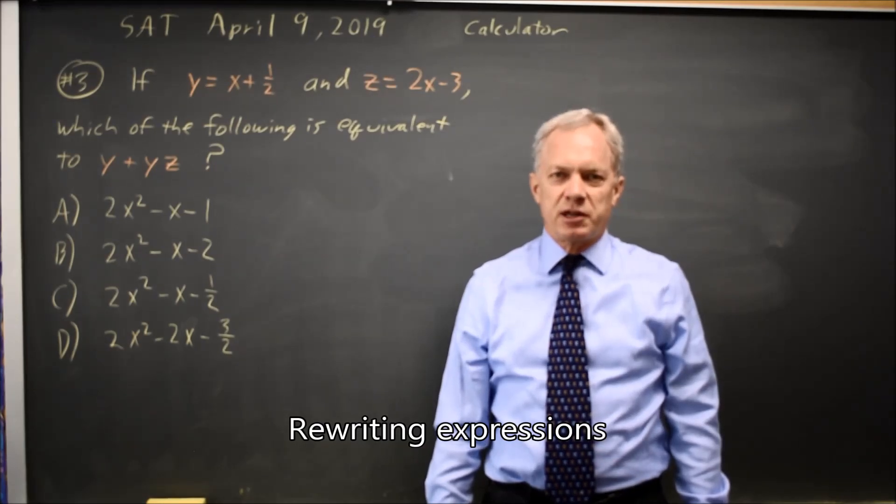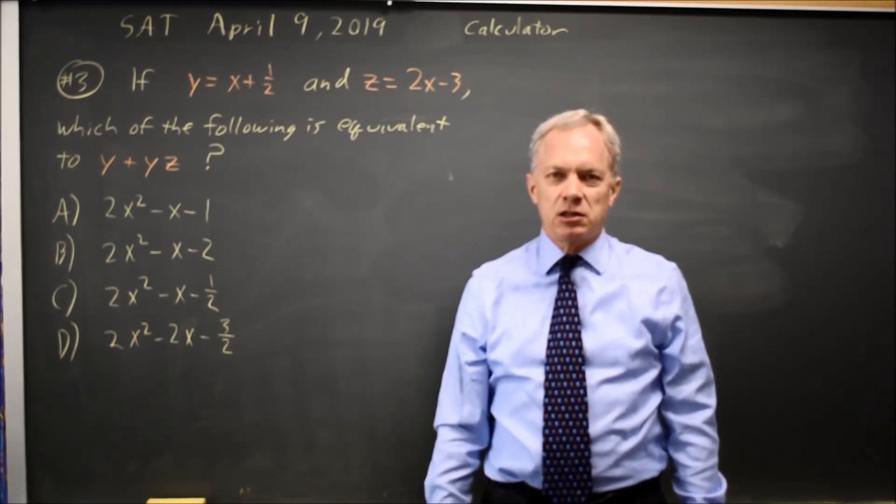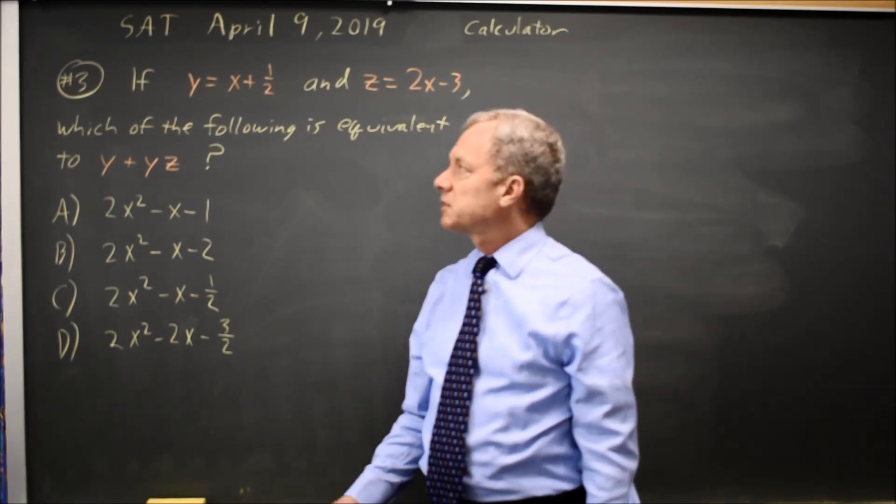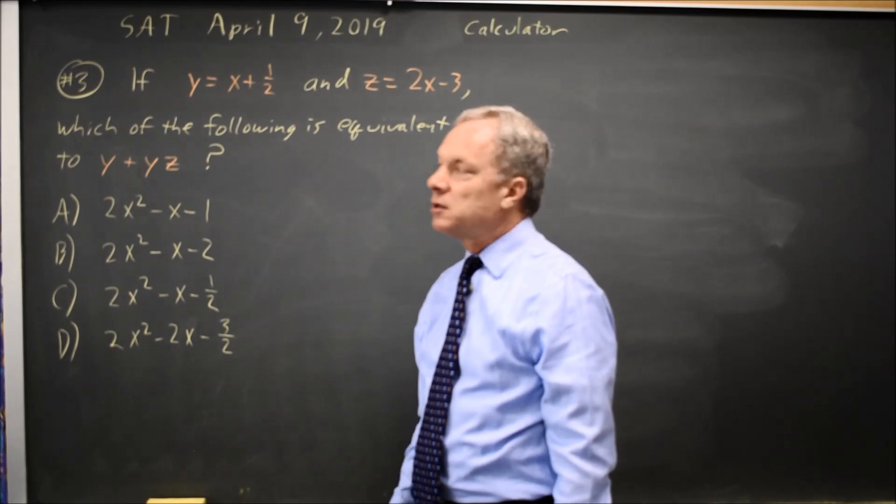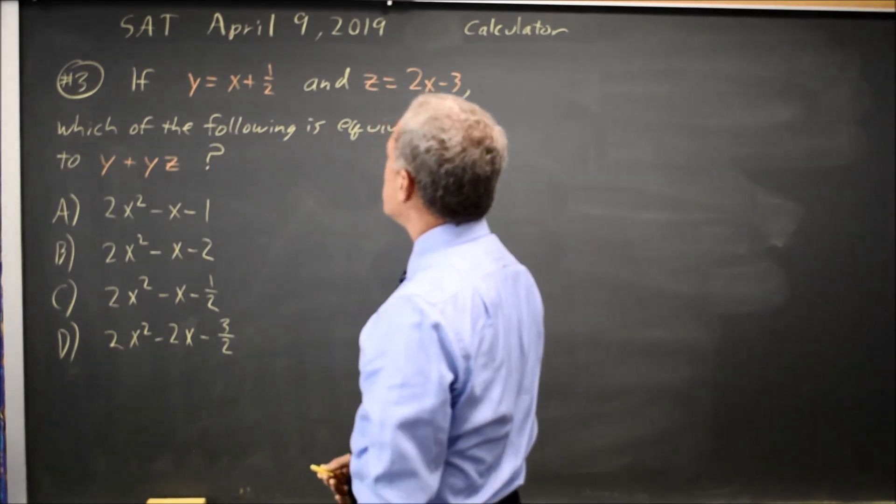This is calculator question number 3 from the April 2019 SAT. College Board gives us two expressions and asks for y plus yz, which looks awkward but it can be made easier.